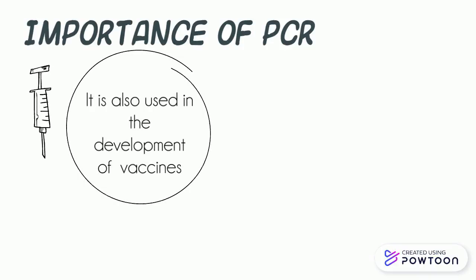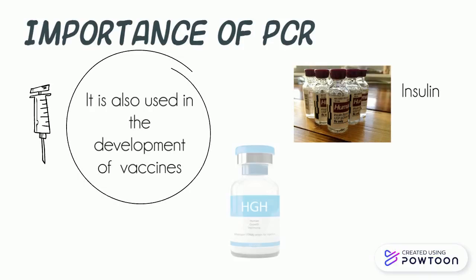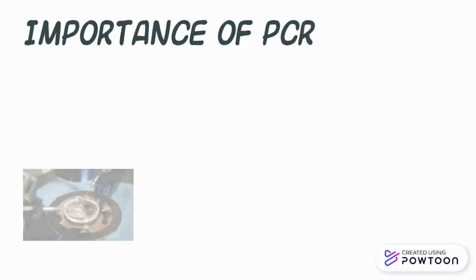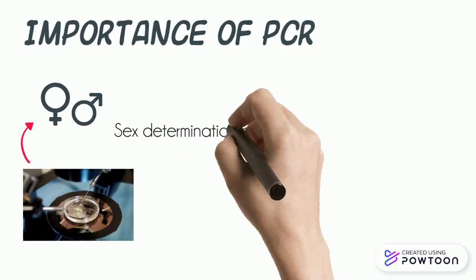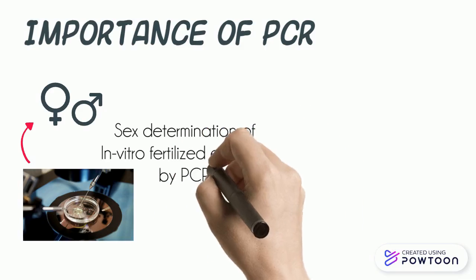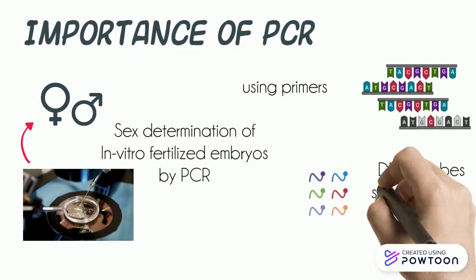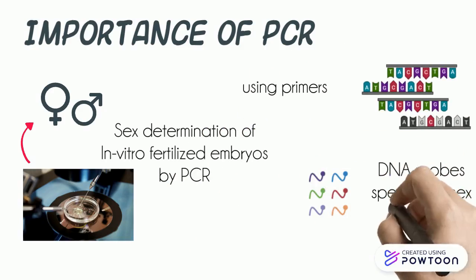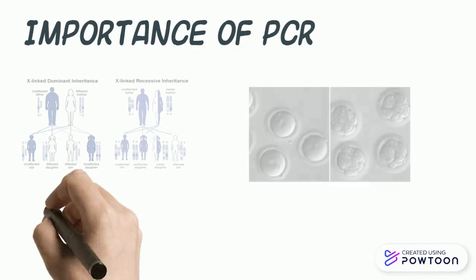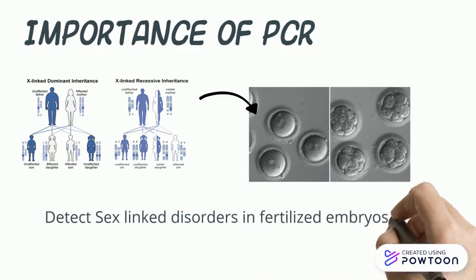PCR is also used in development of vaccines and production of insulin and human growth hormone. The sex of human and livestock embryos fertilized in vitro can be determined by PCR by using primers and DNA probes specific for sex hormones. Further, this technique is also useful to detect sex-linked disorders in fertilized embryos.